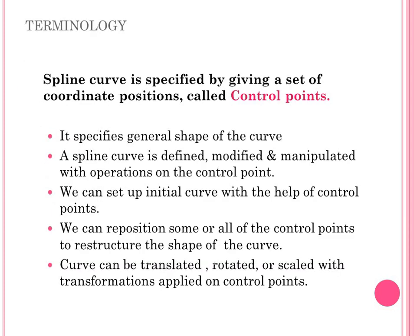A spline curve is specified by giving a set of coordinate positions called control points — the same as the weights used in drafting terminology. Control points specify the general shape of the curve, and the spline curve is defined, modified, and manipulated with operations on the control points. We can restructure the shape by repositioning some or all control points. For example, we can translate the curve by translating the control points, rotate the curve by rotating them, and scale the curve by scaling the control points.